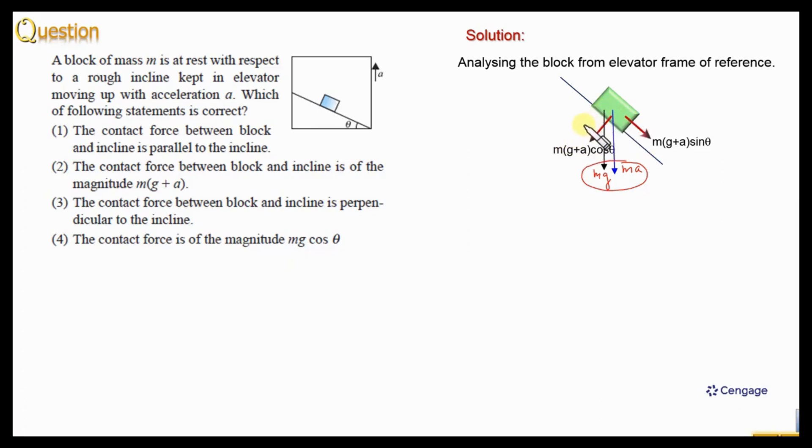Normal reaction will act on the object perpendicular to the surface toward the object, that is n, and friction force will be static in nature, will act opposite to the sliding tendency in upward direction. So this is the friction force small f.